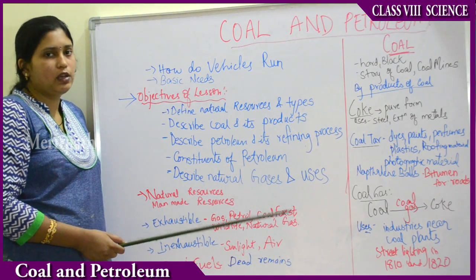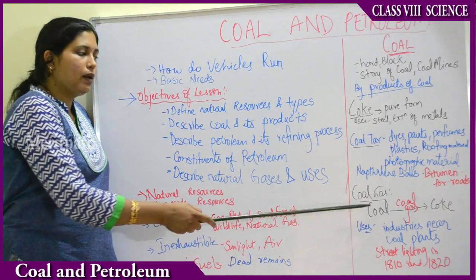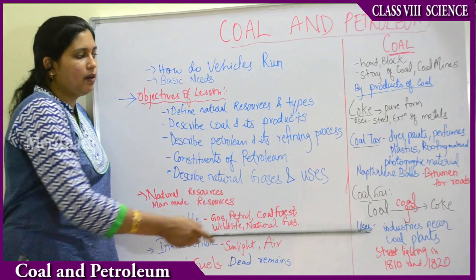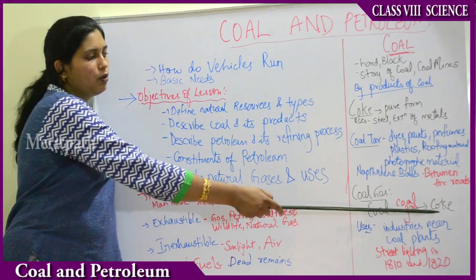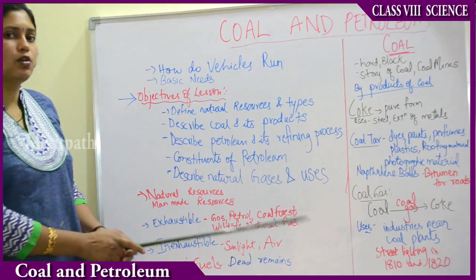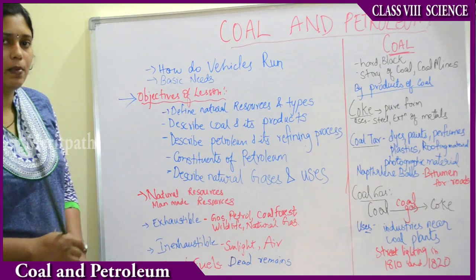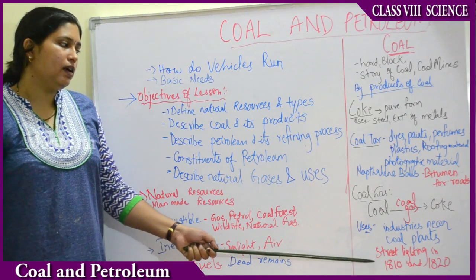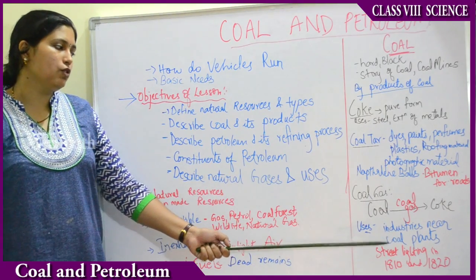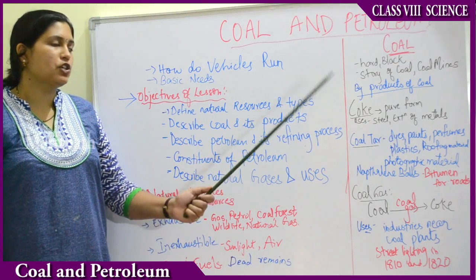Bitumen is a product of petroleum, not coal. Coming to the last byproduct of coal: coal gas. When coal is heated to produce coke, coal gas is emitted. Coal gas is used in industries near coal plants. Earlier, in 1810 and 1820 in Newark and London, coal gas was used for street lighting as well. This completes our discussion on coal, and next we shall move to petroleum.